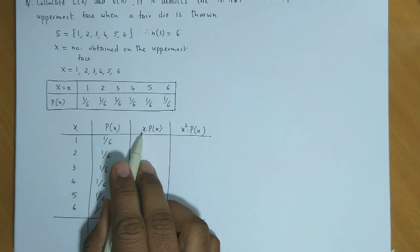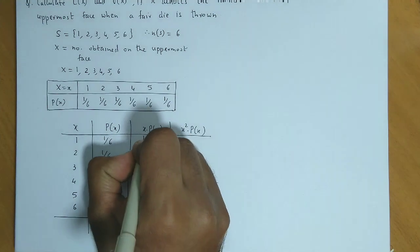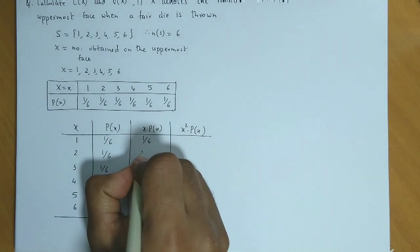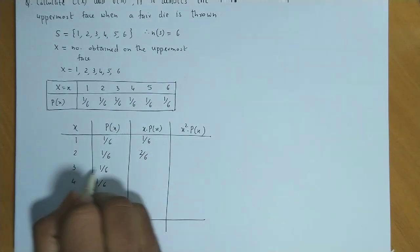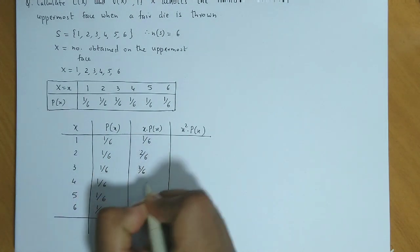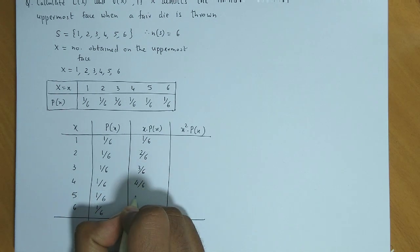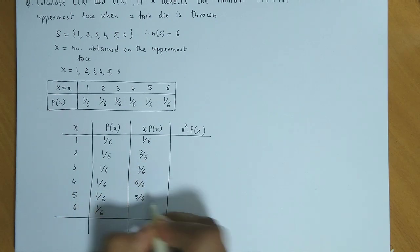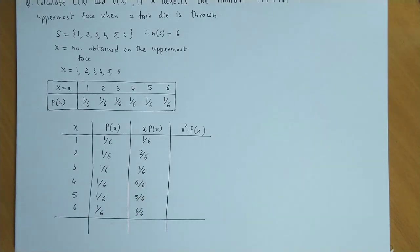Now we compute x·P(x). So: 1 × 1/6 = 1/6; 2 × 1/6 = 2/6; 3 × 1/6 = 3/6; 4 × 1/6 = 4/6; 5 × 1/6 = 5/6; and 6 × 1/6 = 6/6.